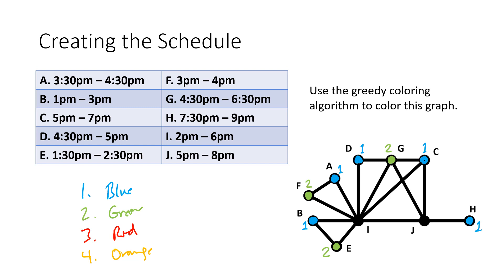Now I is connected to a whole bunch of things that have colors. It can't be blue because it's connected to a bunch of blue vertices, and it can't be green because it's connected to a bunch of green vertices, so I is going to have to be red — color number three. Finally, J is connected to blue vertices C and H, a green vertex G, and a red vertex I, so J is going to have to be color number four.